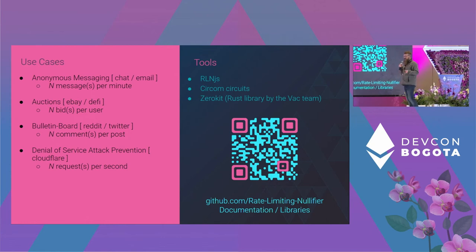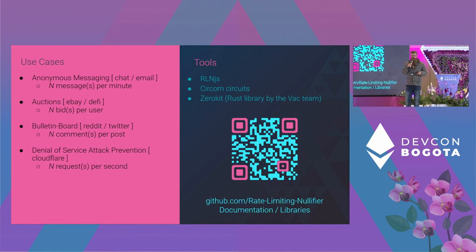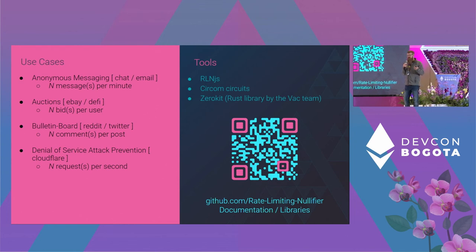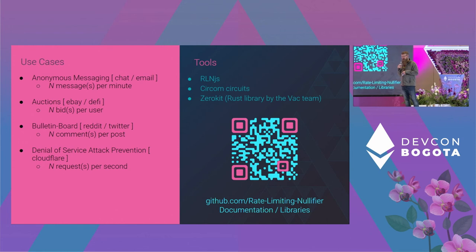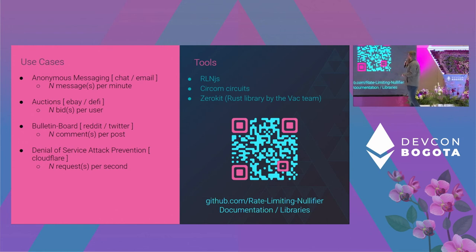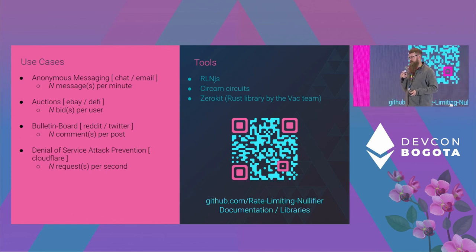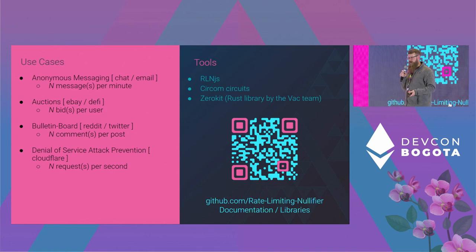This is also used in a couple of applications that PSE has developed, like Skitter — we have ZK chat in there, which is anonymous chat that's rate limited. We have a JavaScript library for this, we're working on a Rust library in collaboration with the VAC team, and we're probably going to write a Python version and a couple other language bindings.